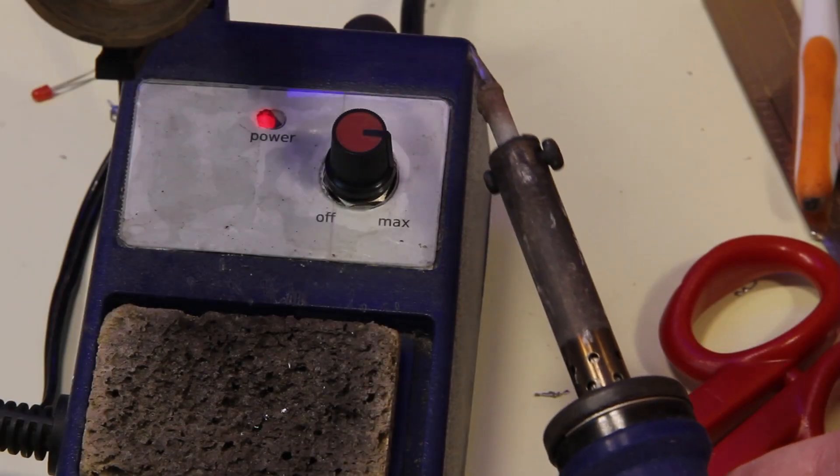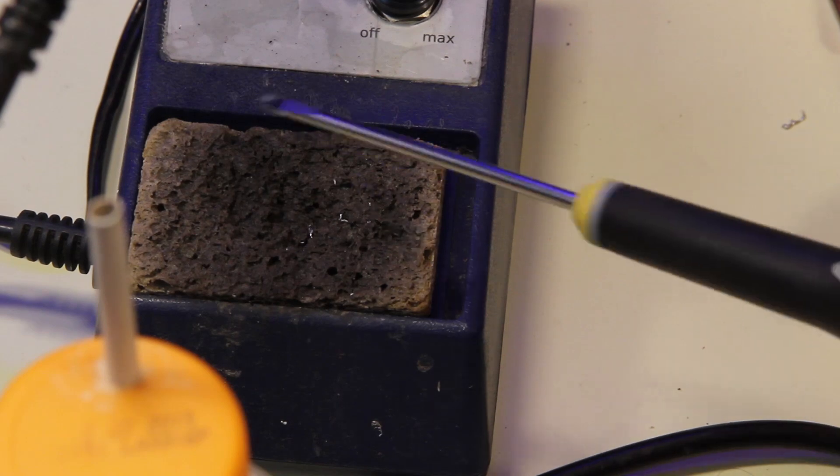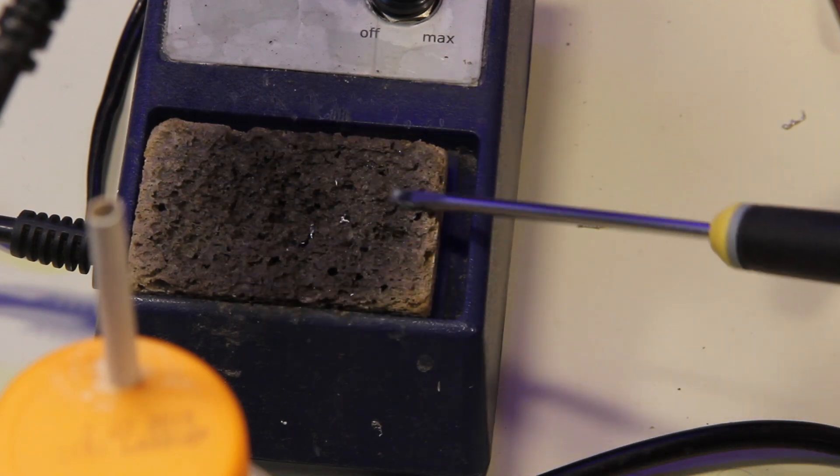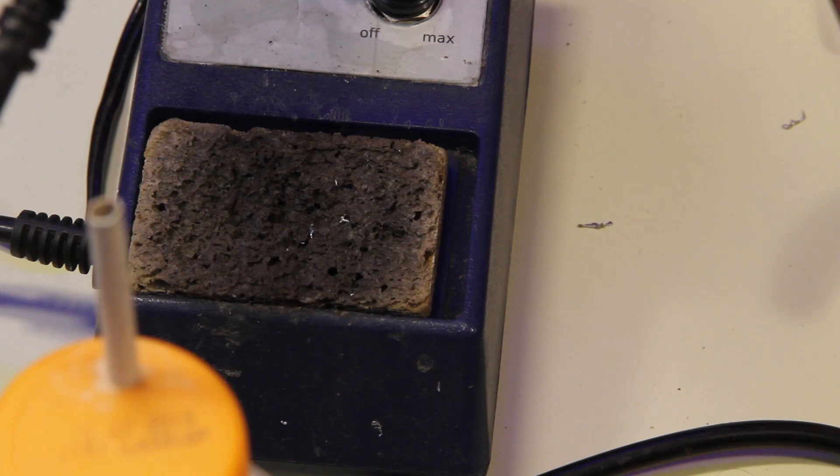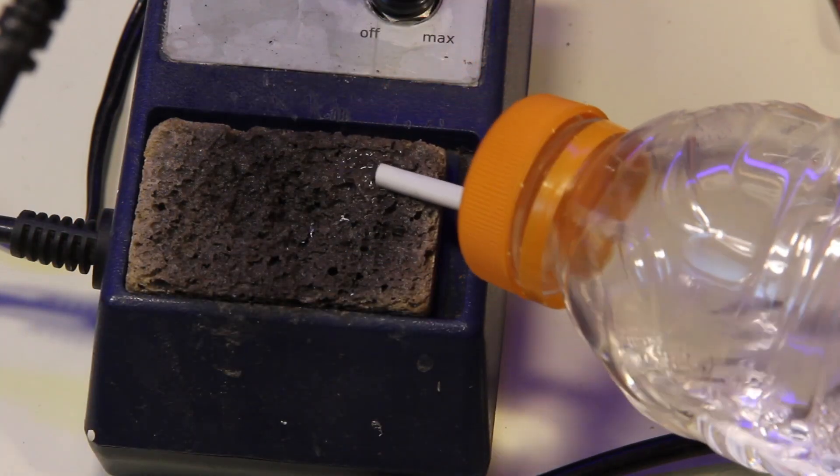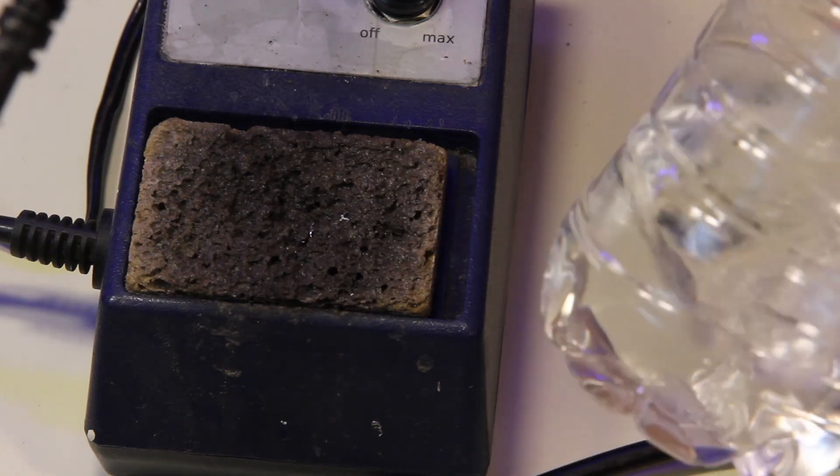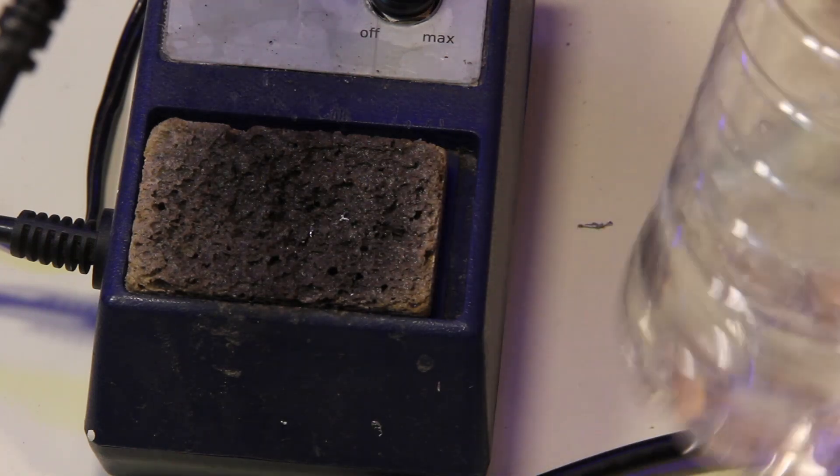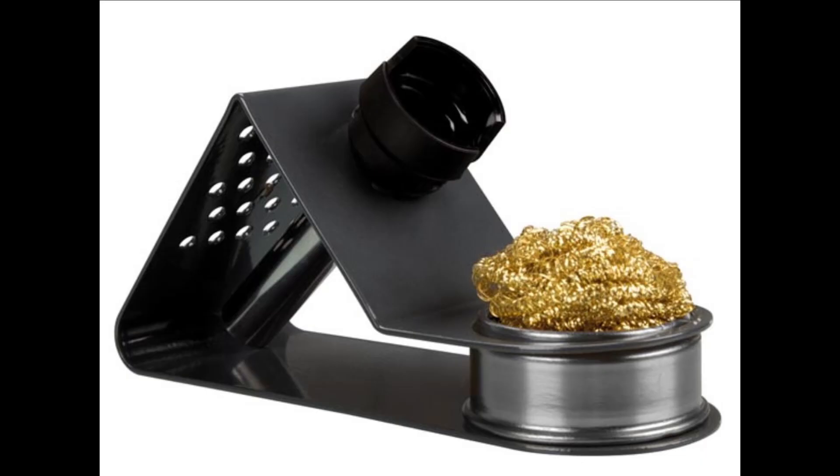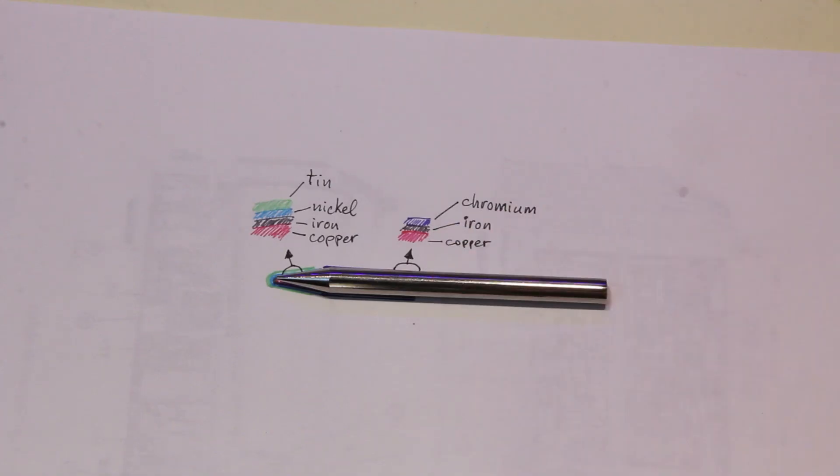Then let the tip warm up at the right temperature. Make sure to have a tip cleaning pad, this is a silicone sponge that is soaked with a bit of demineralized water. It is not advisable to use tap water because it contains salts. I don't recommend to use brass wool because it tends to be abrasive.